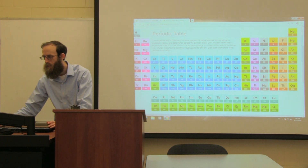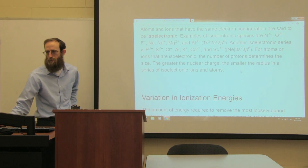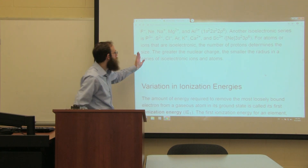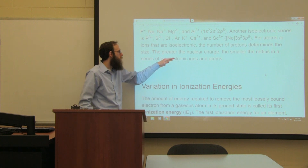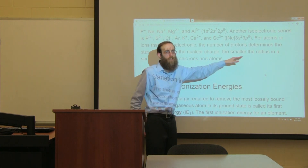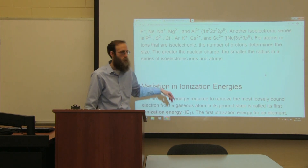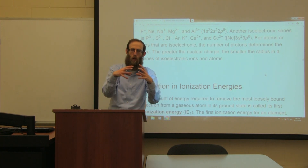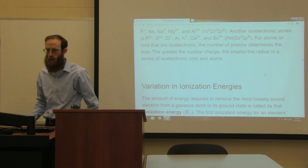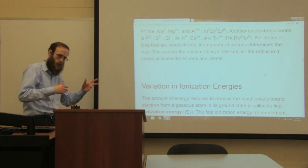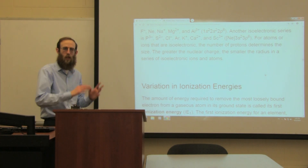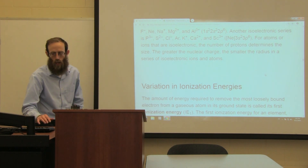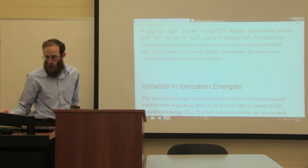For isoelectronic species, the number of protons determines the size. The greater the nuclear charge, the smaller the radius. This aligns with what we know about the radii of neutral versus ionic species.